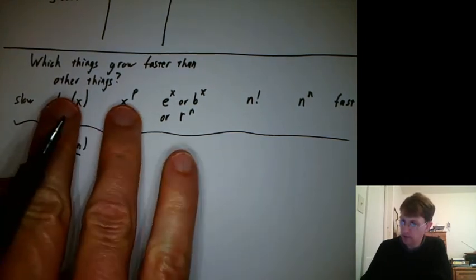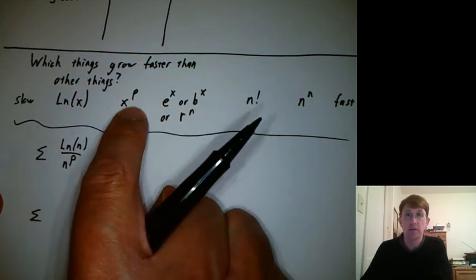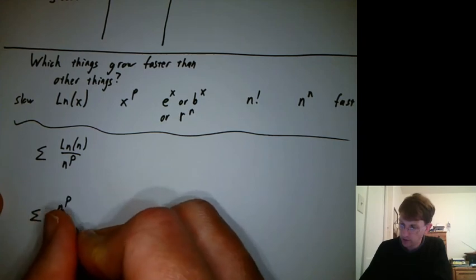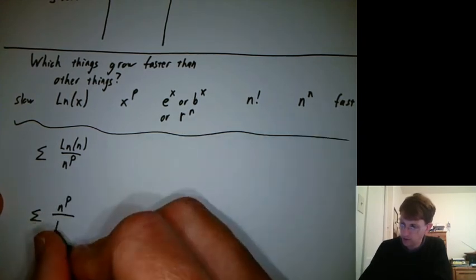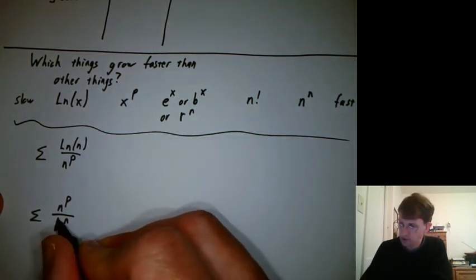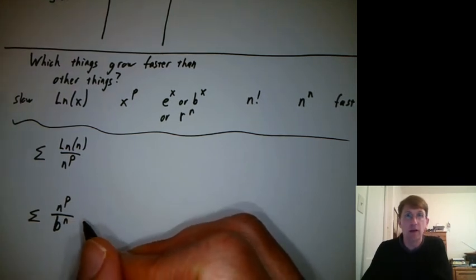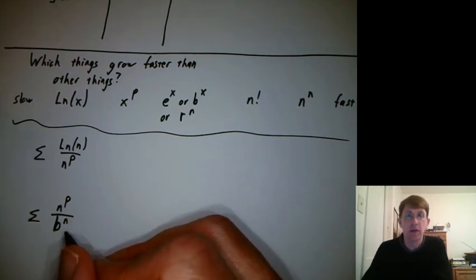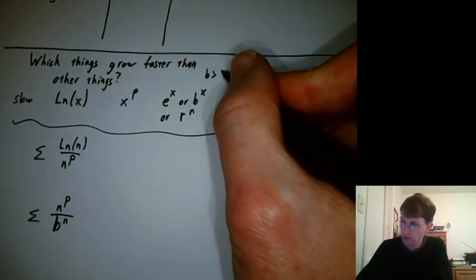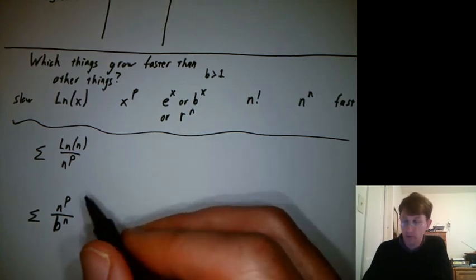Then, so that's comparing these two. Then let's compare these two. We'll put this in the numerator because it grows more slowly than that. So we'll say n to the p over maybe r to the n or b to the n. Maybe it's better to call it b to the n because once I have an n to the p, this is no longer geometric. So is b to the n growing fast enough? We should say b greater than 1 here. Otherwise, it's not growing at all. So does that converge?